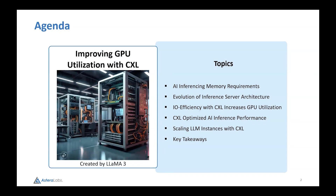The main topics here include AI inferencing memory requirements, the trends we're seeing for AI inferencing servers, and why it's important to improve IO efficiency for accelerating AI. We did various testing with our own Leo CXL memory controller, and we feel that we can really optimize AI inferencing with the help of CXL and scale out LLM instances with CXL.